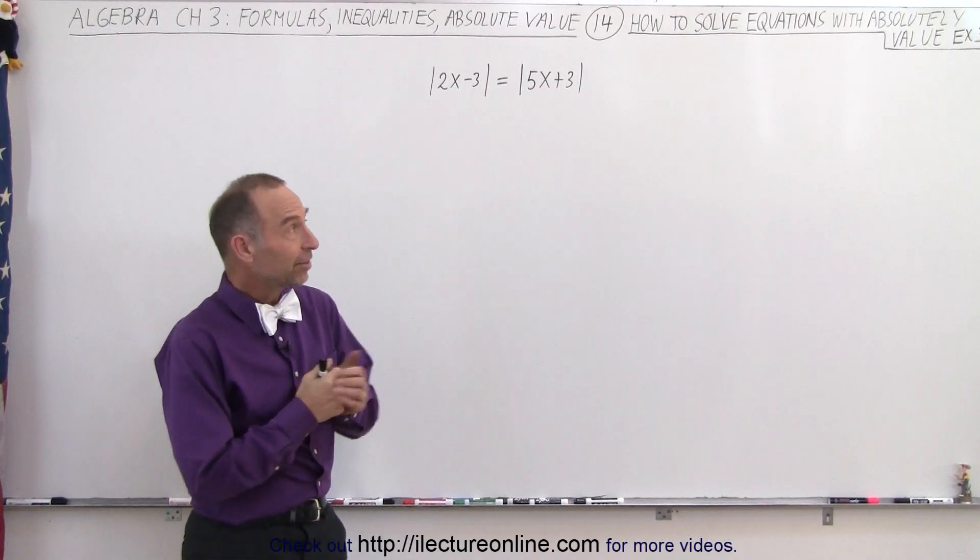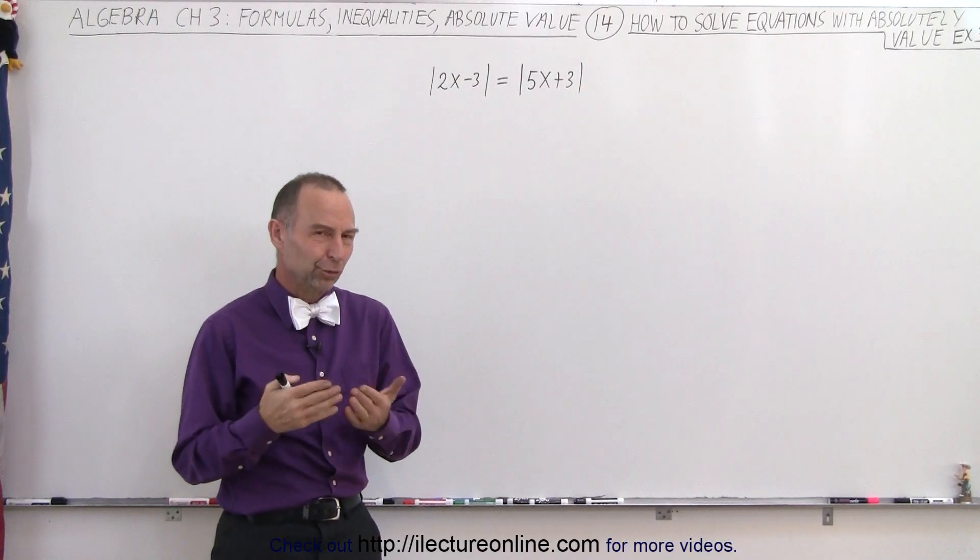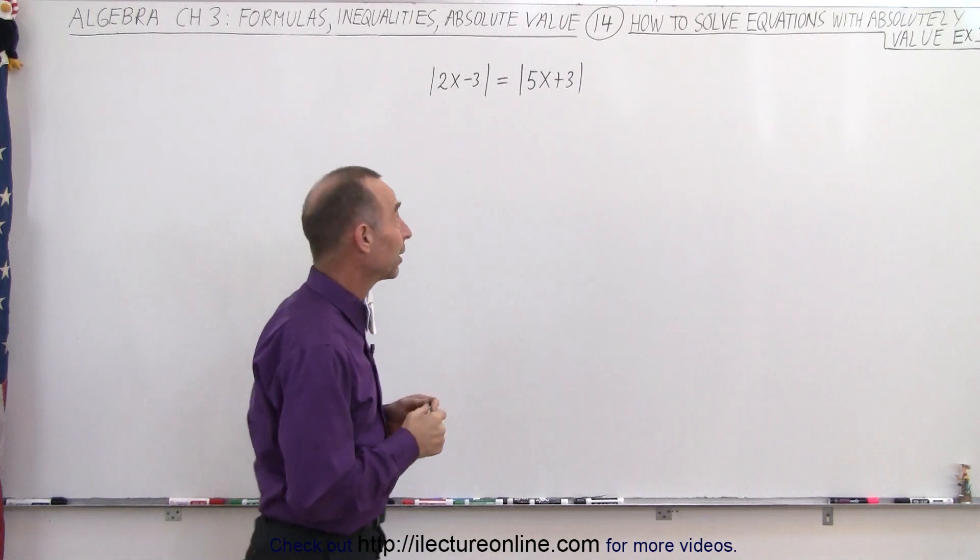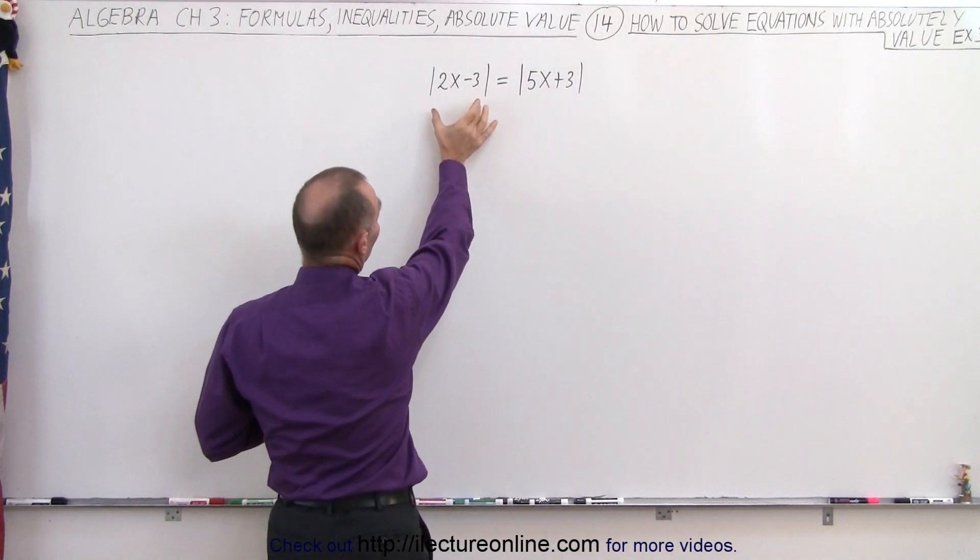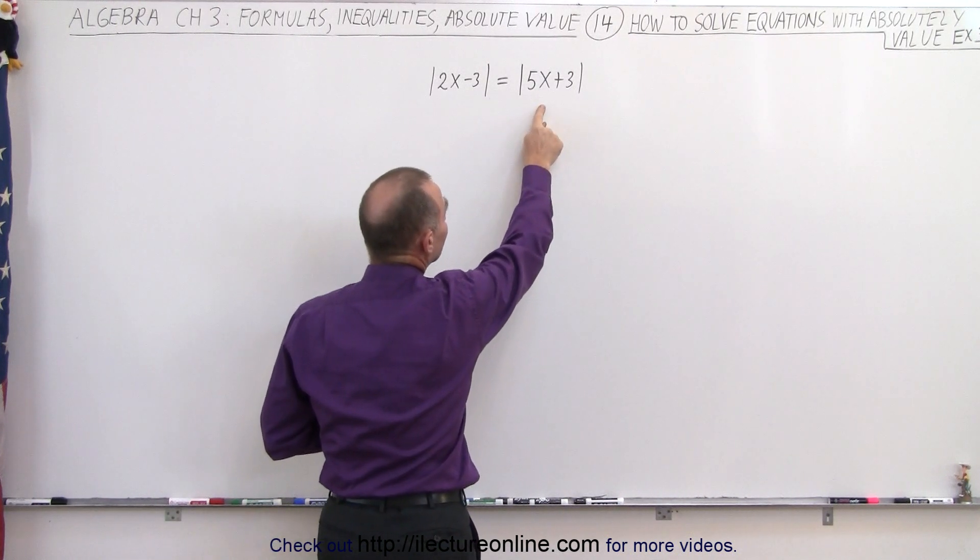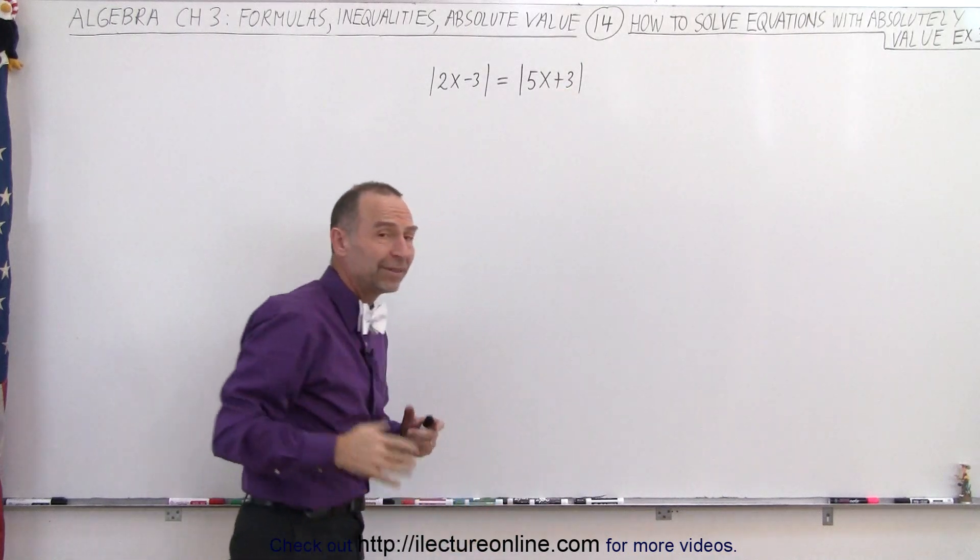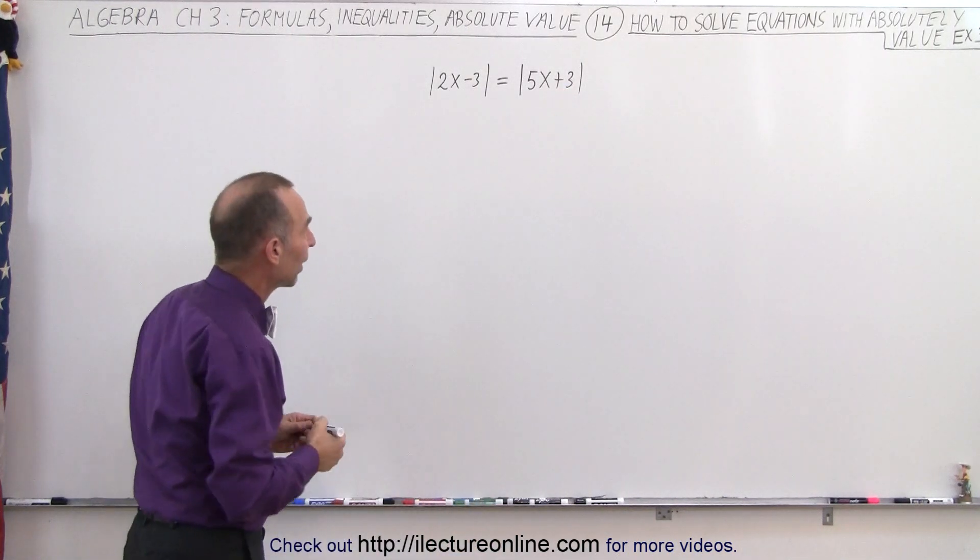Welcome to iLectroOnline. Our next example has an interesting solution, so let's take a look and see what we end up with. The technique is that we'll take the contents of what's inside the absolute value sign on the left side and set it equal to the positive and negative of the contents of what's inside the absolute value sign on the right side.